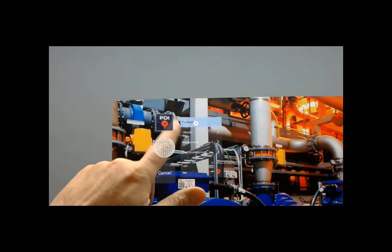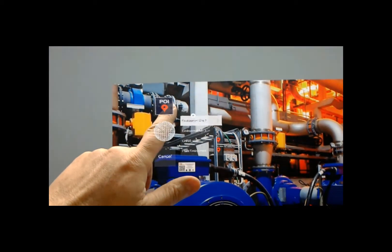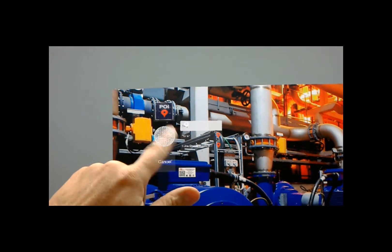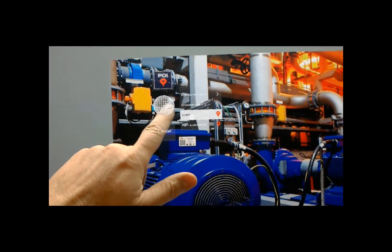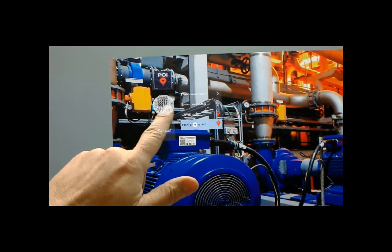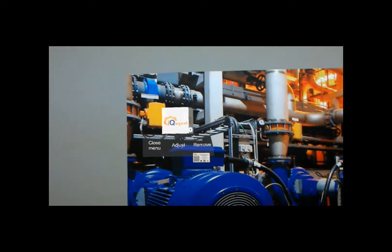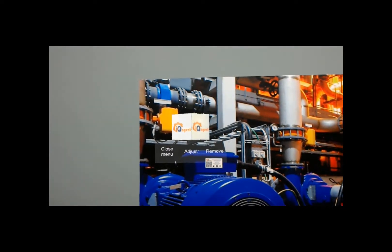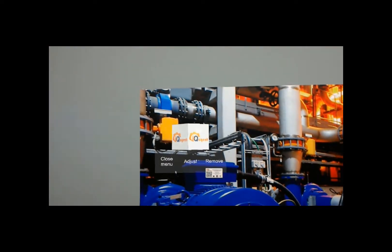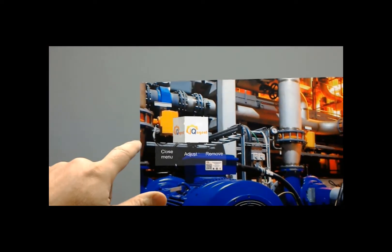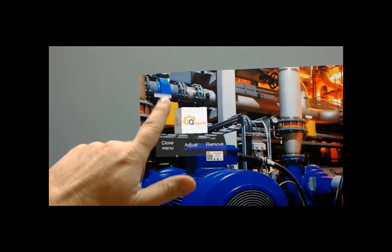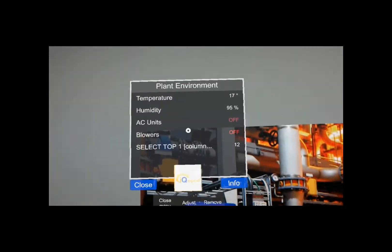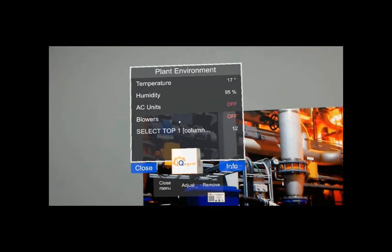Then I'll just go to environment and select that, this time using a tap. And then I'll just do plant environment. Here's the POI — instead of a sphere, we have this kind of rotating cube with our icon on it. And I'll just tap that to open up the POI, and there it is.